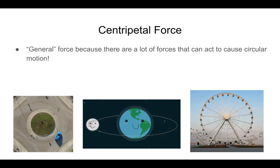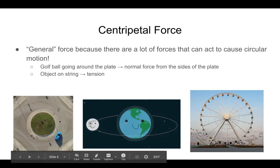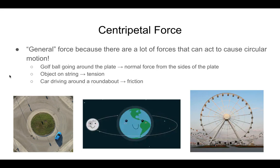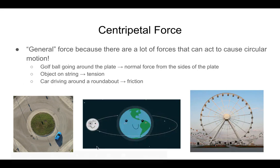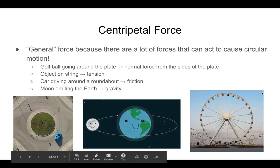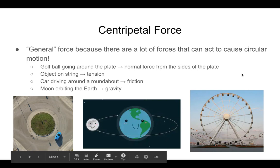Let's talk about centripetal force. It's a general force because many different forces can cause circular motion. For the golf ball on the plate, it's the normal force from the sides. An object on a string being swung in a circle uses tension. A car going around a curve relies on friction — without it, on ice, the car would slide off the road. The moon orbiting the Earth is caused by gravity. A ferris wheel can involve a combination of gravity and normal force.